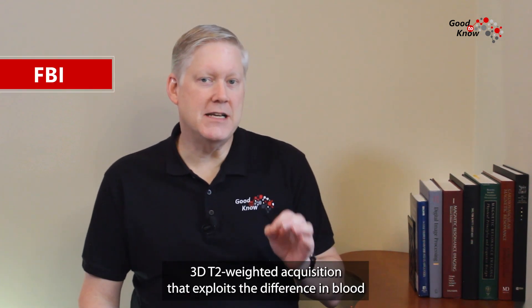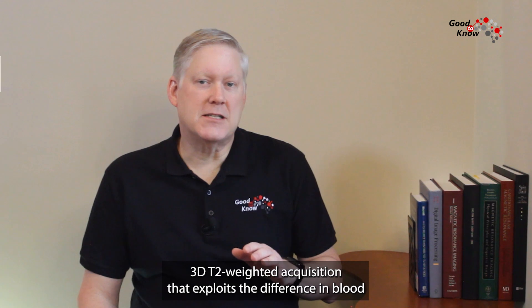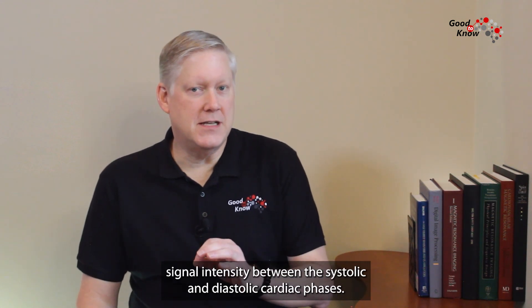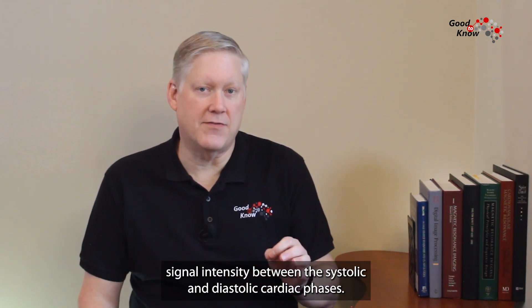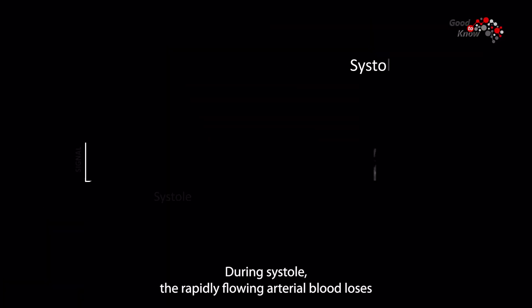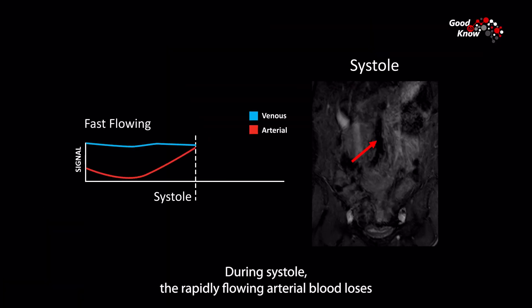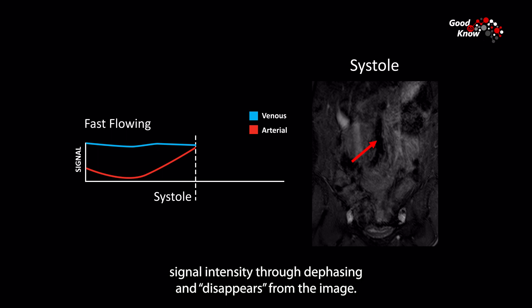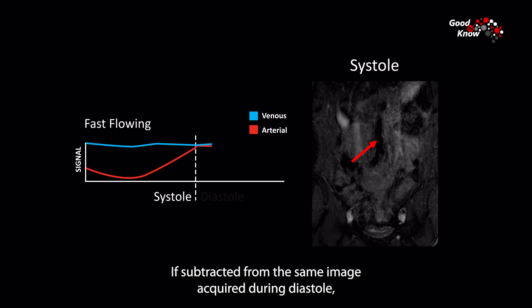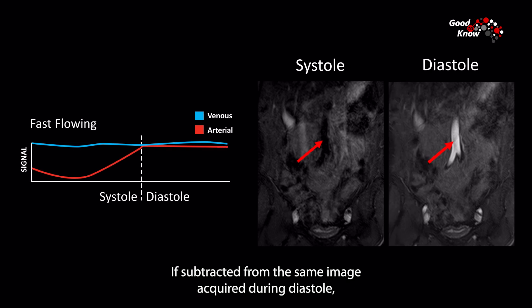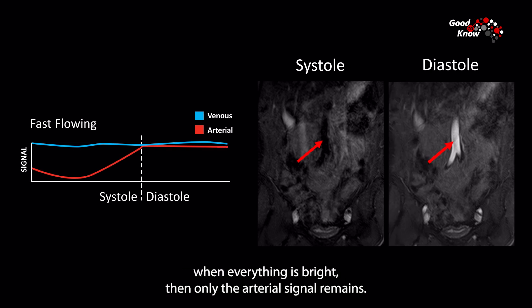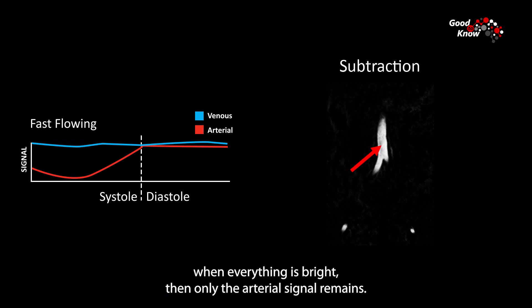FBI is a cardiac-gated, 3D, T2-weighted acquisition that exploits the difference in blood signal intensity between systolic and diastolic cardiac phases. During systole, the rapidly flowing arterial blood loses signal intensity through dephasing and disappears from the image. If subtracted from the same image acquired during diastole, when everything is bright, then only the arterial signal remains.